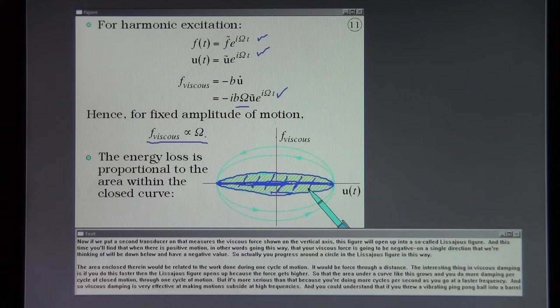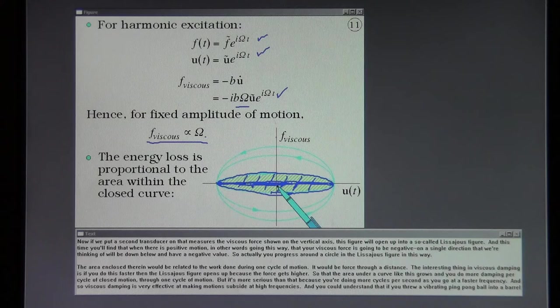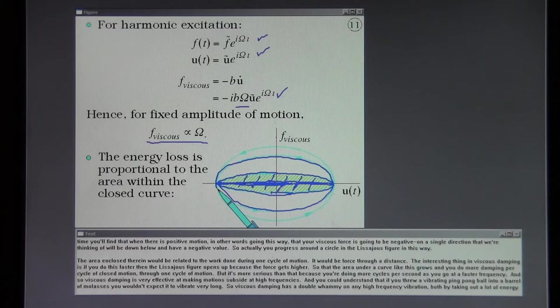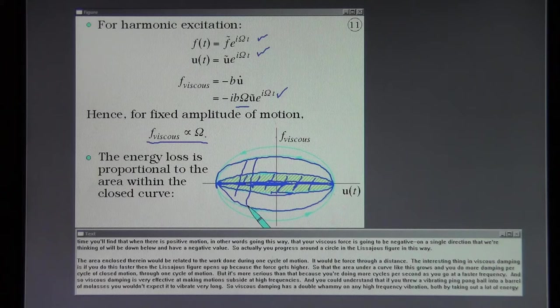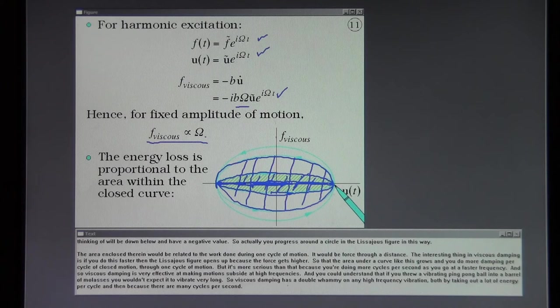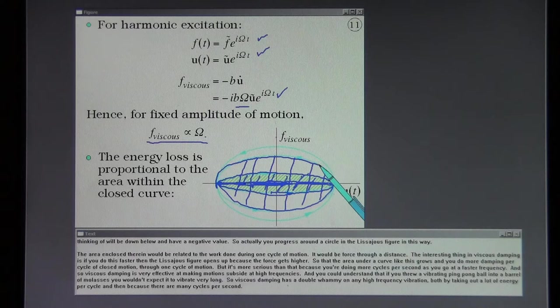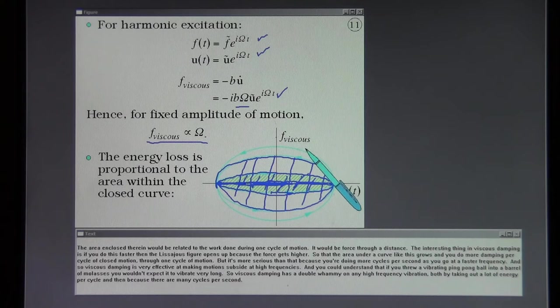The area enclosed therein would be related to the work done during one cycle of motion. It would be force through a distance. The interesting thing in viscous damping is if you do this faster the Lissajou figure opens up because the force gets higher. So that the area under a curve like this grows and you do more damping per cycle of closed motion through one cycle of motion. But it's more serious than that because you're doing more cycles per second as you go at a faster frequency. And so viscous damping is very effective at making motion subside at high frequencies. And you could understand that if you threw a vibrating ping pong ball into a barrel of molasses. You wouldn't expect it to vibrate very long. So viscous damping has a double whammy on it.